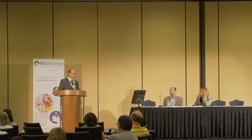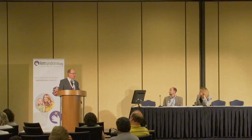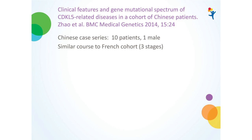There have been several case series. The Chinese case series — 'Clinical Features and Gene Mutational Spectrum of CDKL5-Related Diseases in a Cohort of Chinese Patients' — had 10 patients, one male. The output was that they saw a similar course — stages 1, 2, and 3 — to the French cohort.